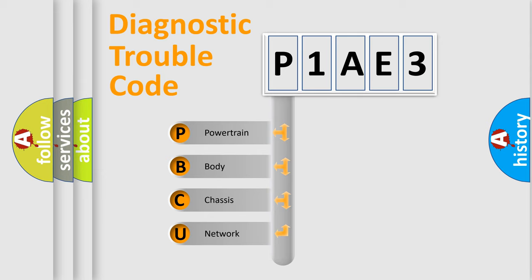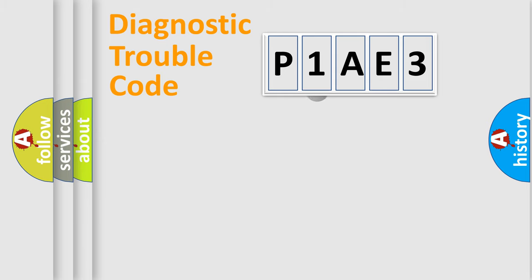We divide the electric system of automobile into four basic units: powertrain, body, chassis, and network. This distribution is defined in the first character code.